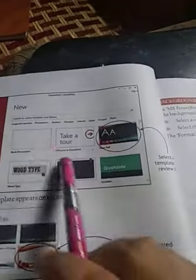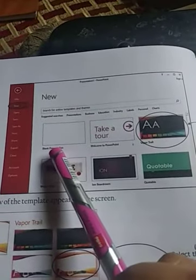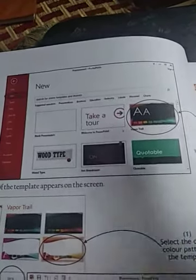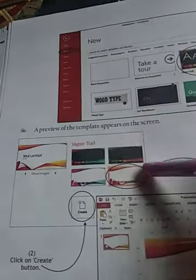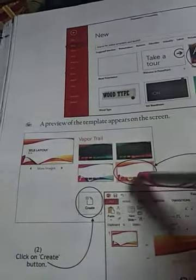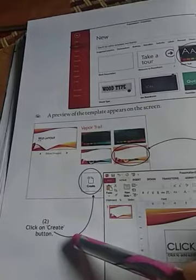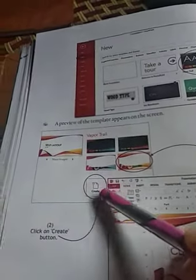Here you see a completely blank presentation, and then different other types of presentations with color combinations are present. You can choose any one of the color combinations. When you choose any color combination, a preview of that template appears on the screen. You select the desired colored pattern of the template and then click on the Create button. When you click Create, the option will be available to write your text.